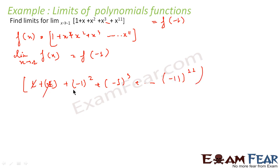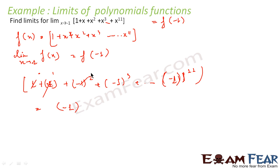So this and this cancel. Then 2 and 3 cancel. Similarly all terms up to power 10 and 11 will be cancelled — because minus 1 to the power 0 and 1 cancel (giving 1 and minus 1), minus 1 to the power 2 and 3 cancel, similarly 4 and 5 cancel, 6 and 7 cancel, 8 and 9 cancel, 10 and 11 cancel. Everything cancels and we get 0.